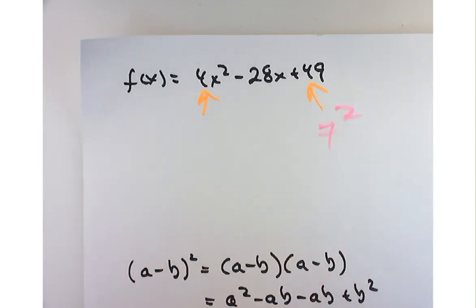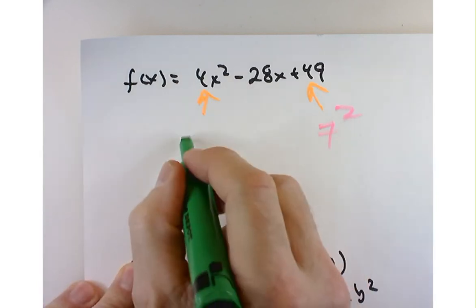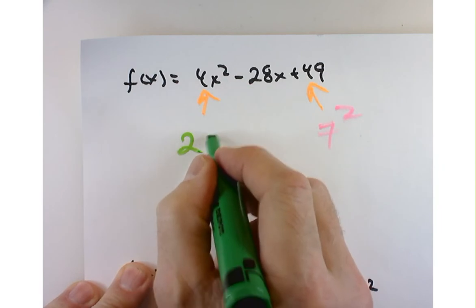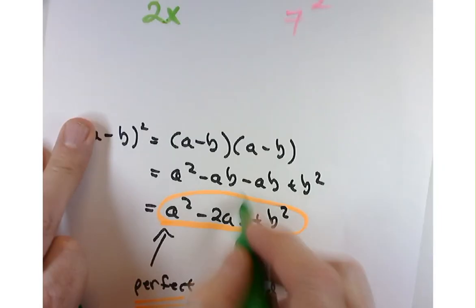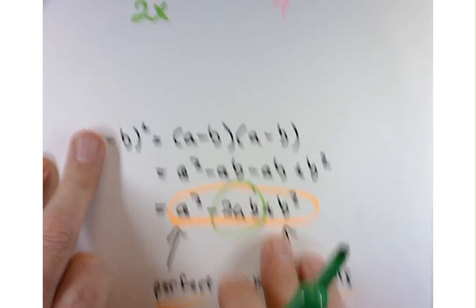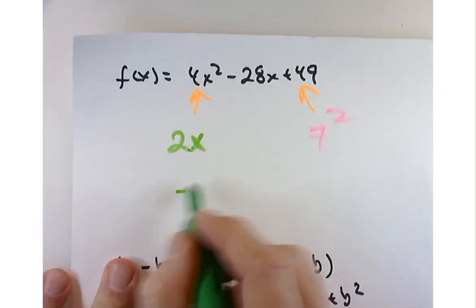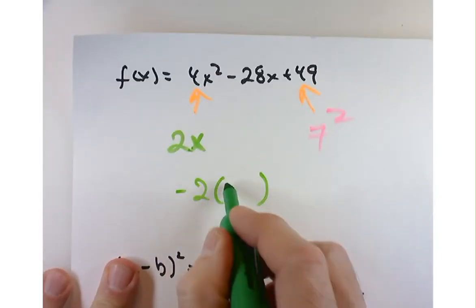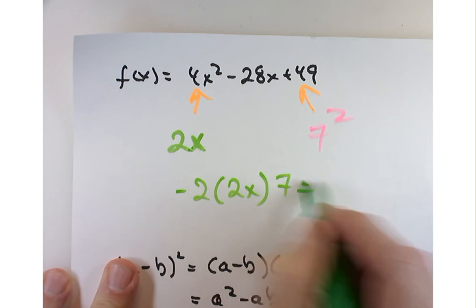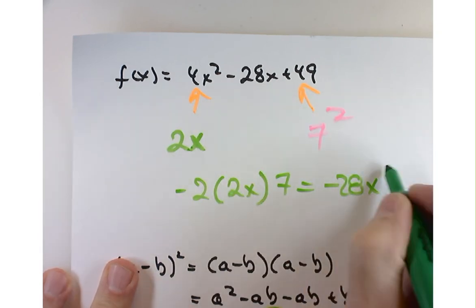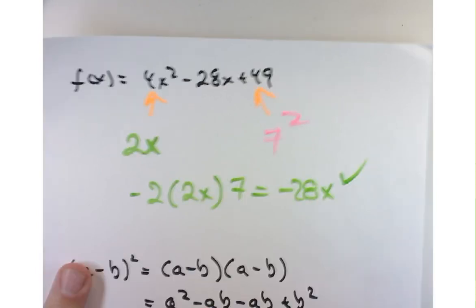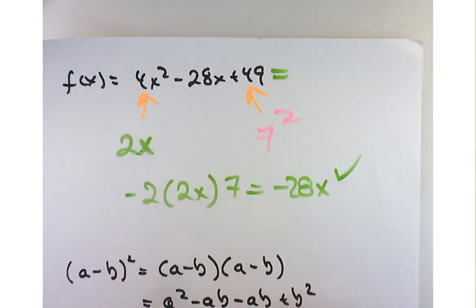But how about the other term? Is that a perfect square? What do I square to get 4? 2. What do I square to get this? x. So what you want to do is see, does the middle term line up? If you take negative 2 times 2x times 7 and get the middle term, in this case we do, hey, that means that this can be factored. It's a perfect square.